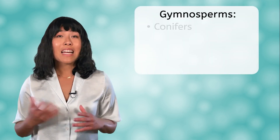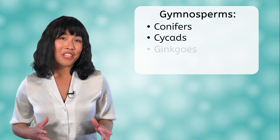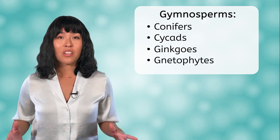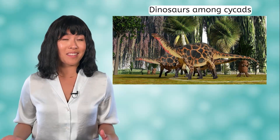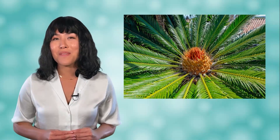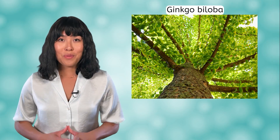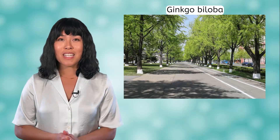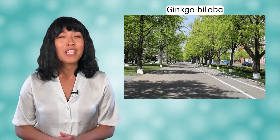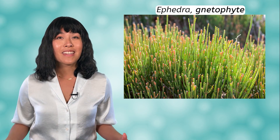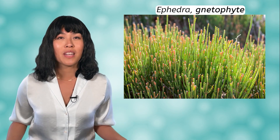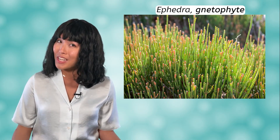Other types of gymnosperms besides the conifers include cycads, ginkgos, and gnetophytes. Cycads, such as the sago palm, thrived during the time of the dinosaurs and resemble palm trees, other than the large cone that rests in the middle. There is only one living species of ginkgo, the Ginkgo biloba. It was originally cultivated in China for use around temples, but is now commonly planted in urban areas for shade. Our last group of gymnosperms, the gnetophytes, are shrubs, small trees, or vines. This ephedra plant produces ephedrine, which you may be familiar with as a decongestant.